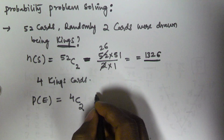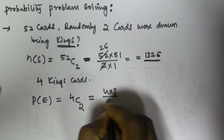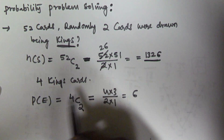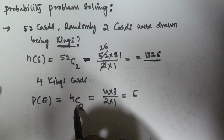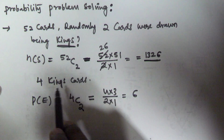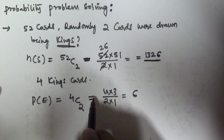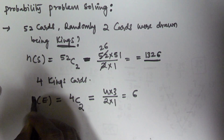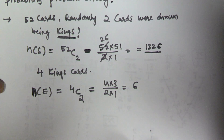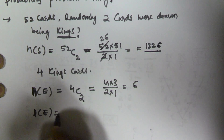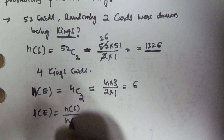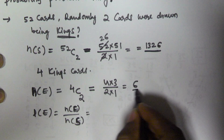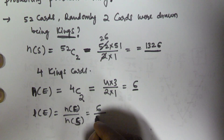4C2 is going to be 4 into 3 by 2 into 1, which equals 6. The probability of selecting 2 kings out of 4 kings is 4C2 = 4 into 3 by 126. This is n(E), the cardinality — the number of elements in the event E. The probability of E is defined as n(E) by n(S). The number of elements in the event E is 6 and the number of elements in the sample space is 1326.